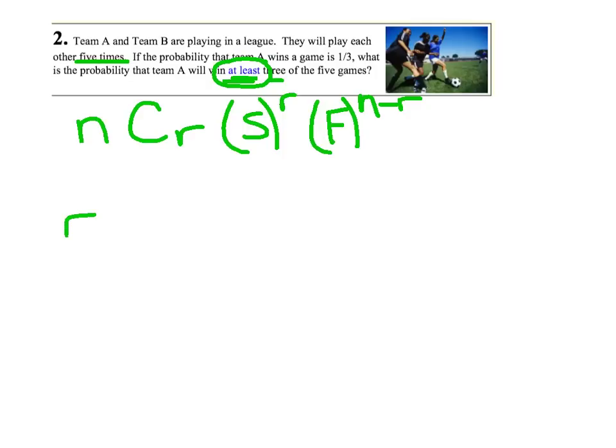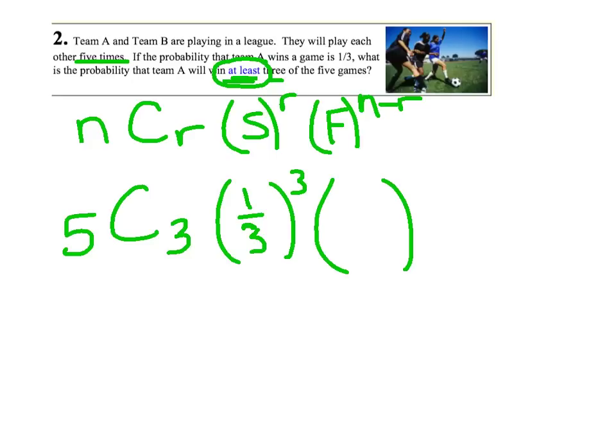The keyword is at least. So I'm going to set up that formula, NCR, success to the R, failure to the N minus R. So I'm going to set up my exactly first, just my one line. It says they're going to play a total of five games, and I'm looking for at least three. The probability that Team A will win a game is one-third raised to the third. And if they win one out of three times, then they fail two out of three times to the second.